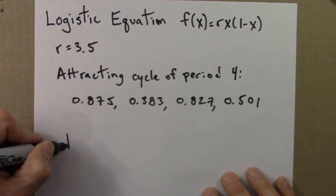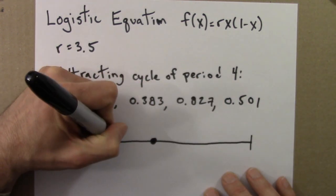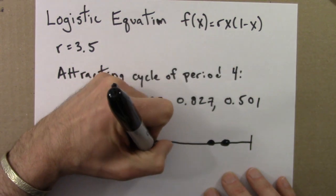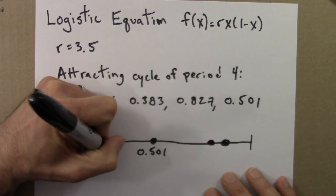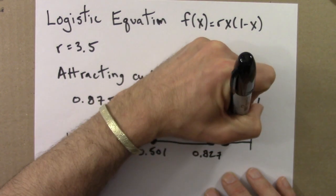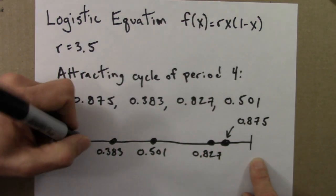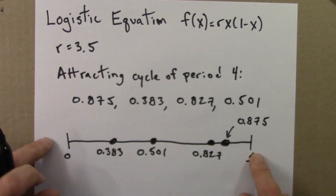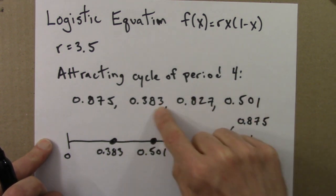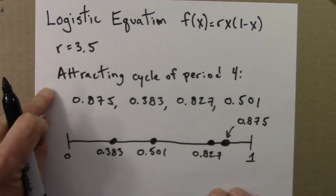And lastly, we can summarize this behavior with a final state diagram. In this case, there are 4 final states because it's cycling among 4 values. So on my final state diagram, remember this is 0, this is 1. I would have 4 values corresponding to the values in the cycle. 1, 2, 3, 4. There they are. So when r is 3.5, we have an attracting cycle of period 4.